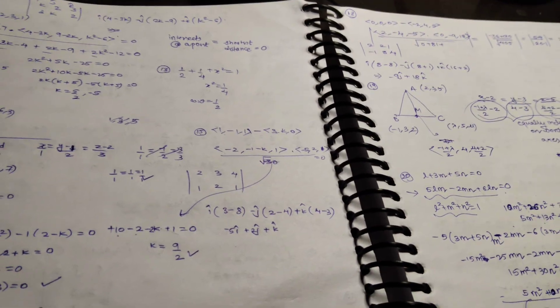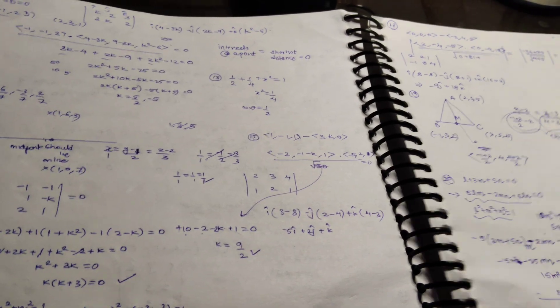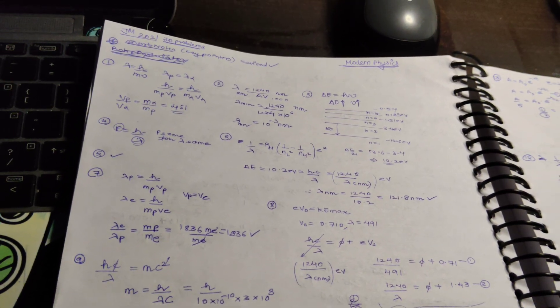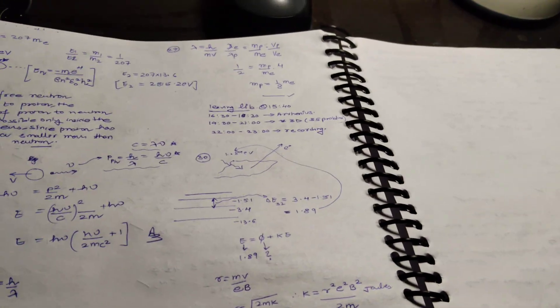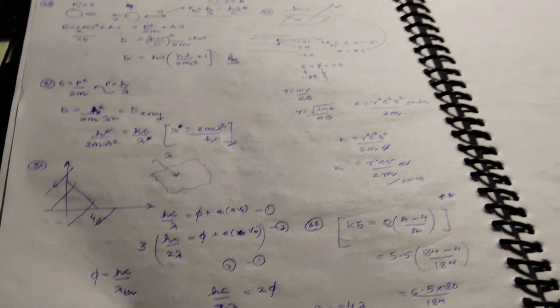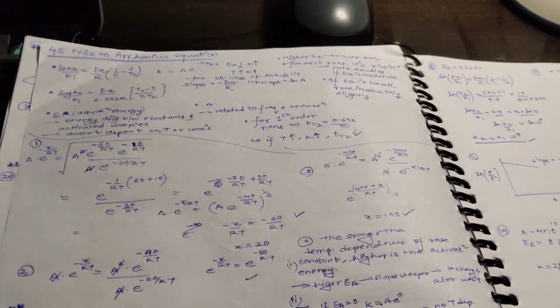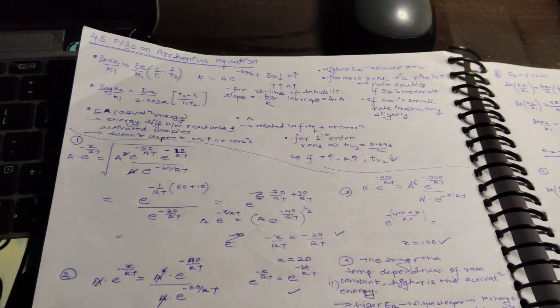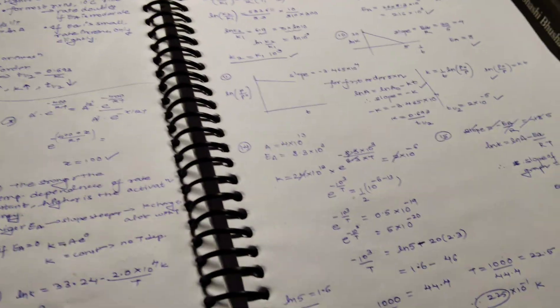I worked on 3D geometry and revised some formulas. After that, I took modern physics and solved around 33 problems. Then I thought of doing 45 PYQs based on Arrhenius equation, but didn't complete them and left some pages for it.